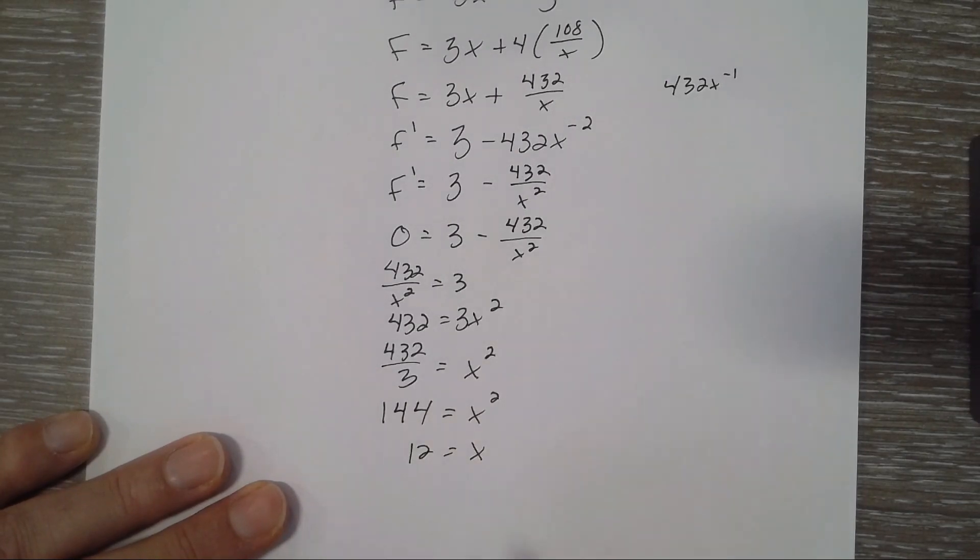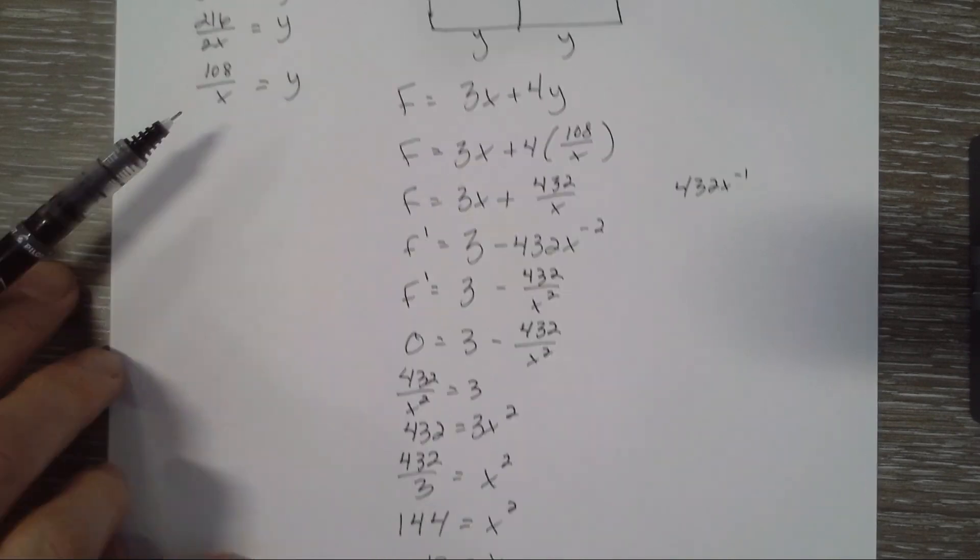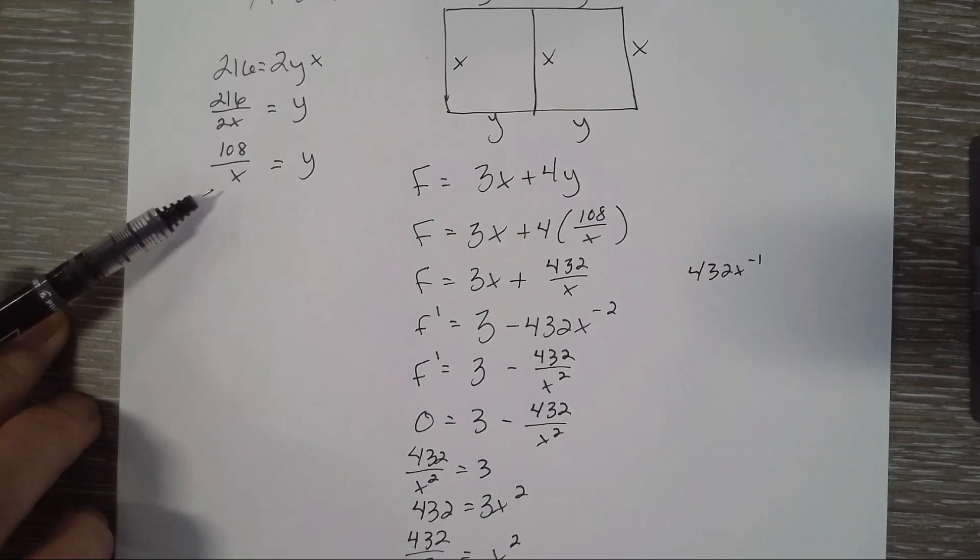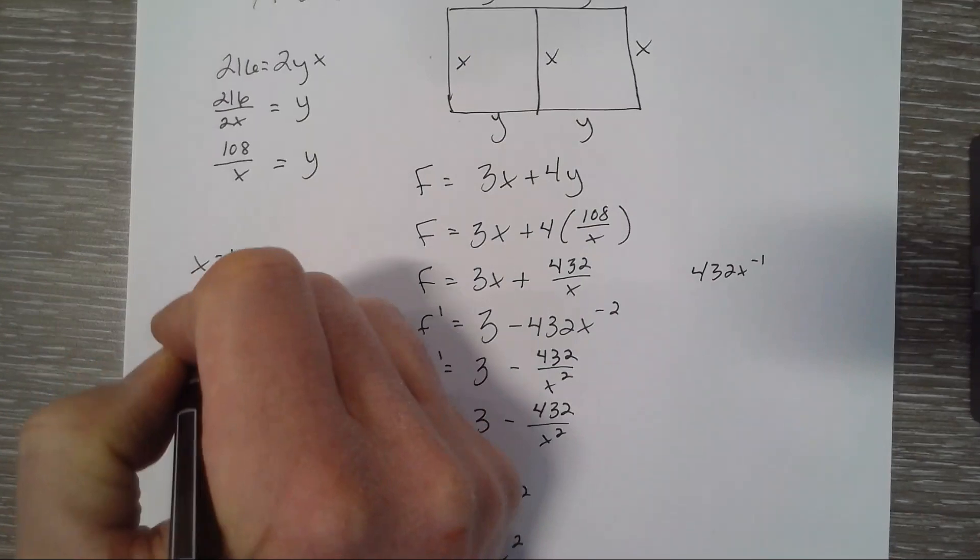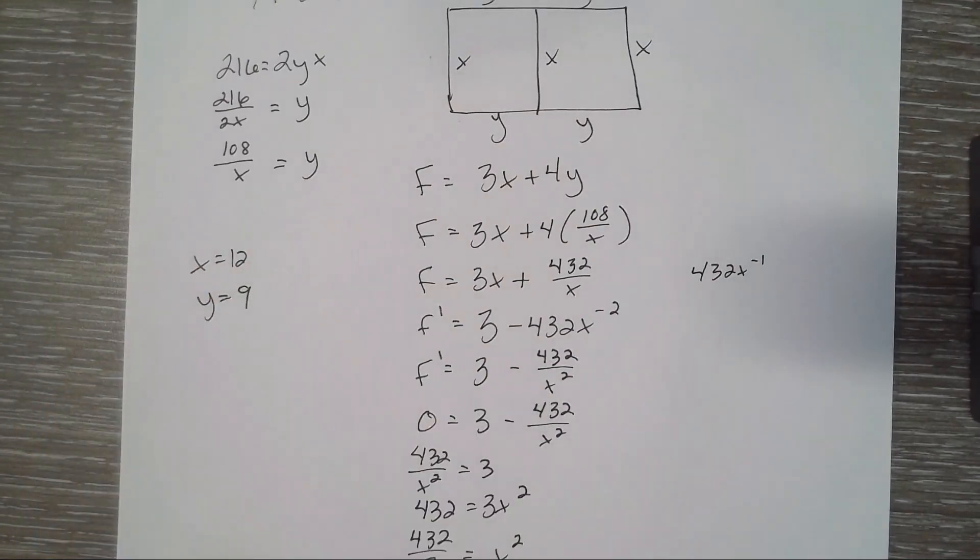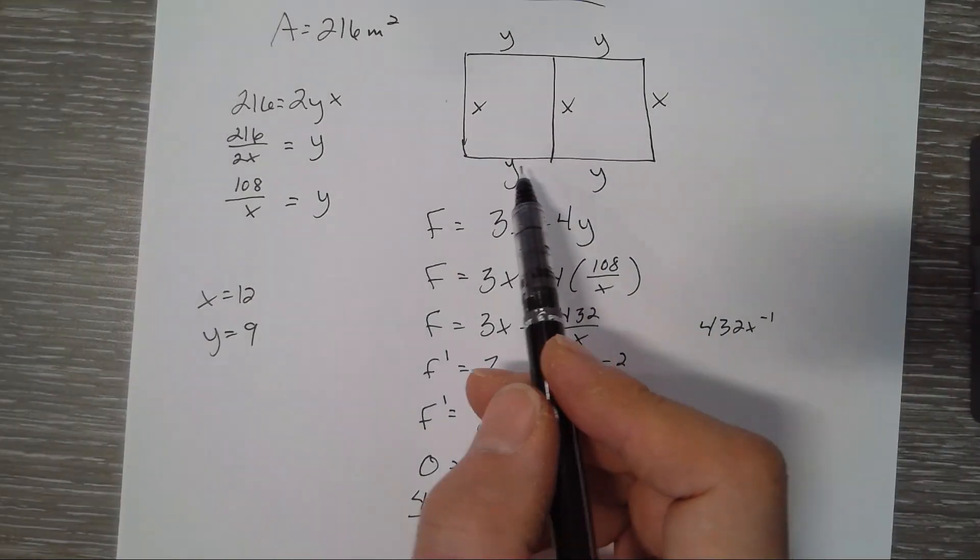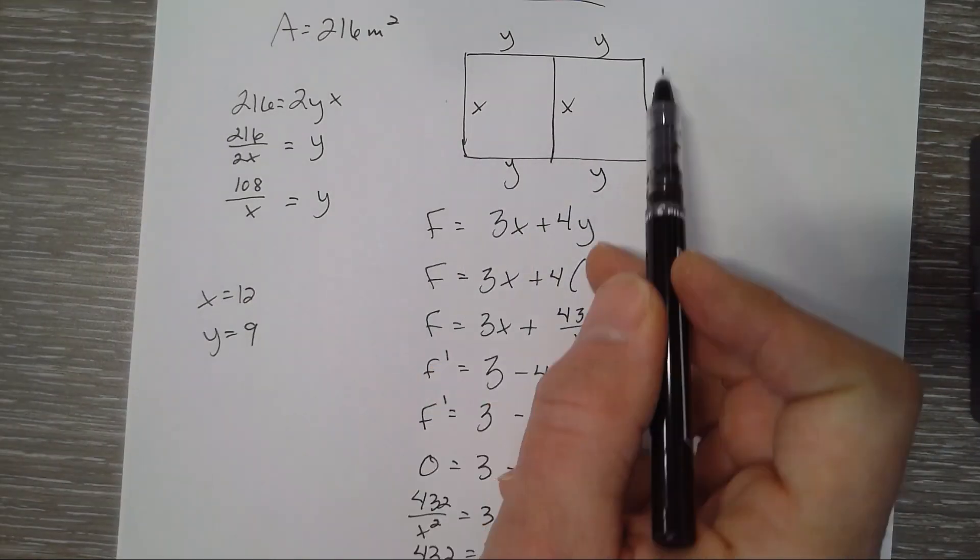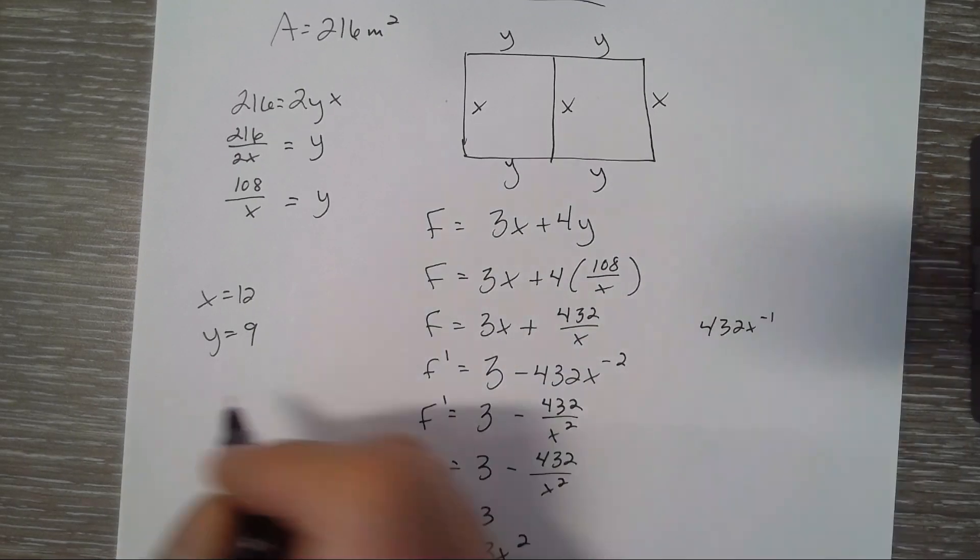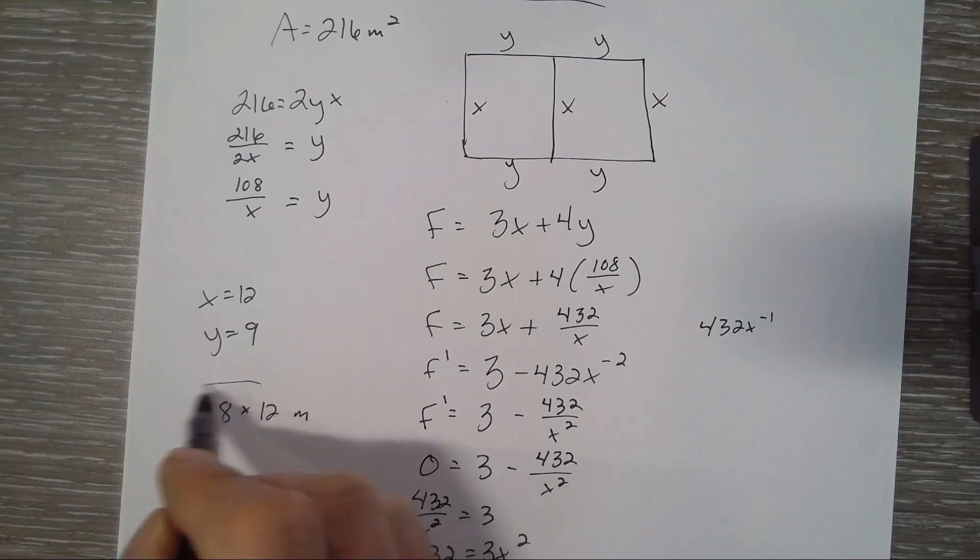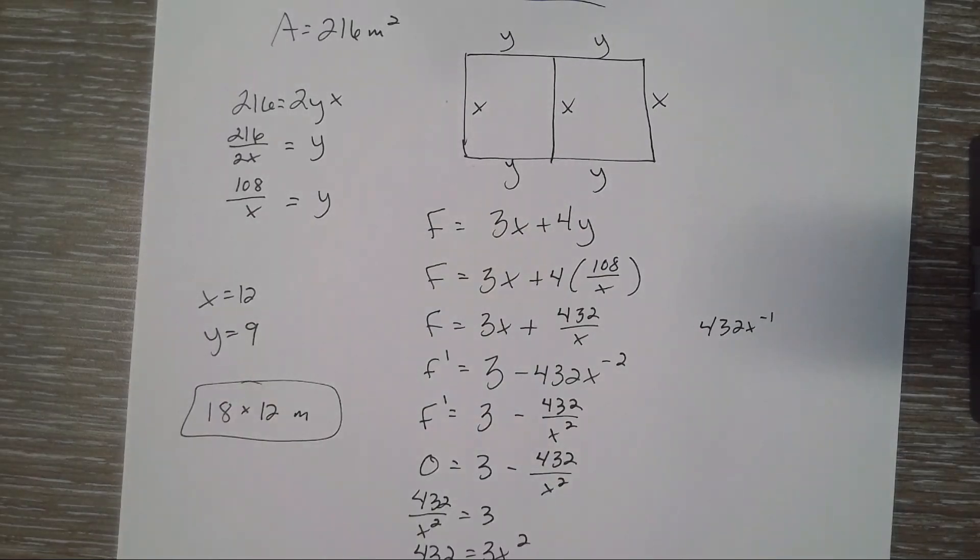And we can plug 12 in, figure out what Y is. Way up here. 108 divided by 12 will get us Y. So that is 9. So if X is 12 and Y is 9, I think they want the outer dimensions. What would that be? 18 by 12 would be technically the answer that they're looking for. That's in meters. 18 by 12. That will produce the smallest amount of fence.